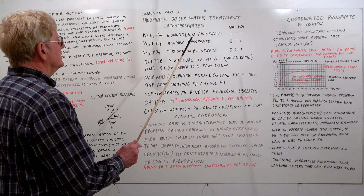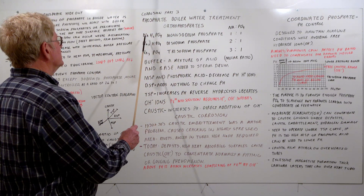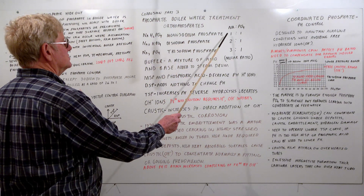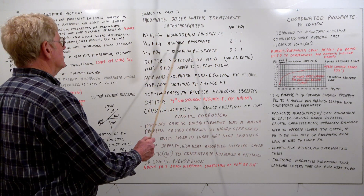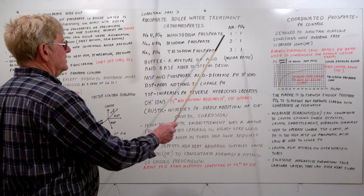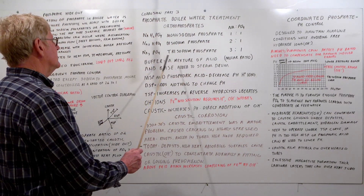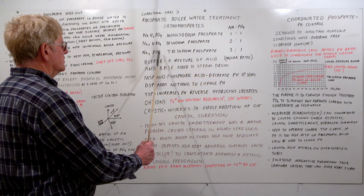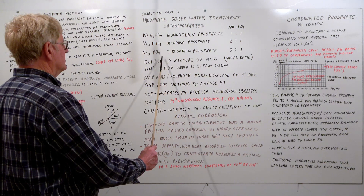We're dealing with orthophosphates. We have monosodium phosphate — one sodium, one phosphate, a one-to-one sodium-to-phosphate ratio. Disodium phosphate — two sodiums, one phosphate, a two-to-one ratio. And trisodium phosphate — three sodiums, one phosphate. Trisodium phosphate is what is predominantly used in boiler water treatment.